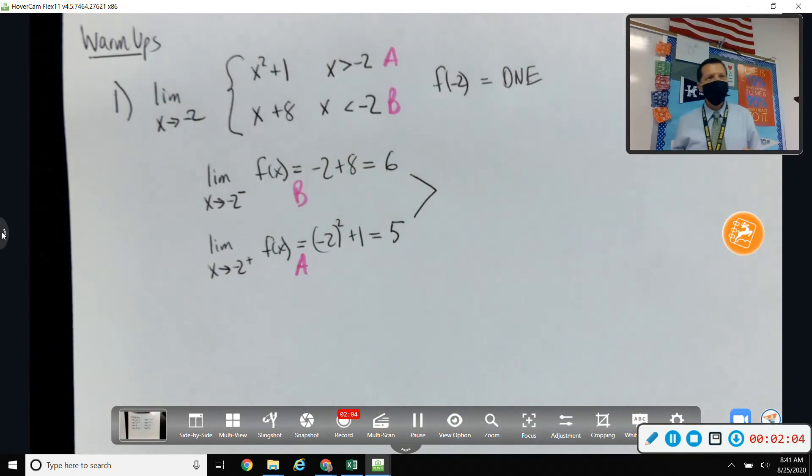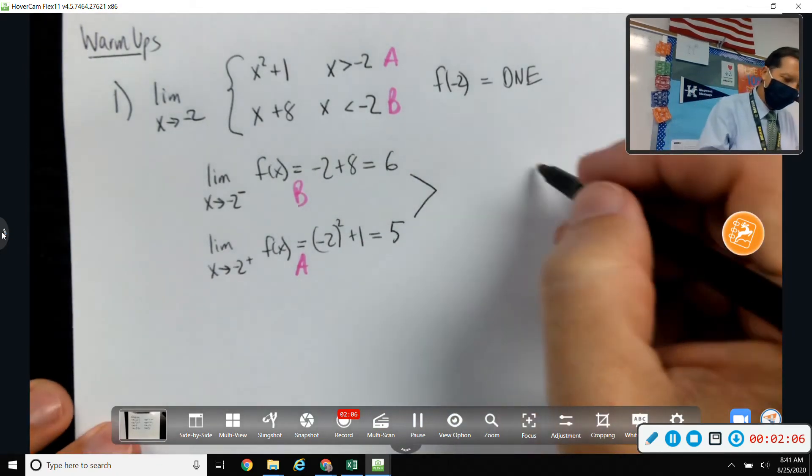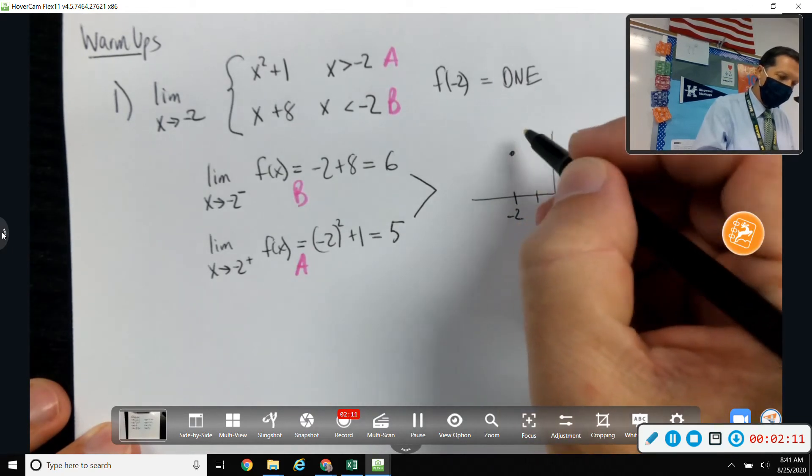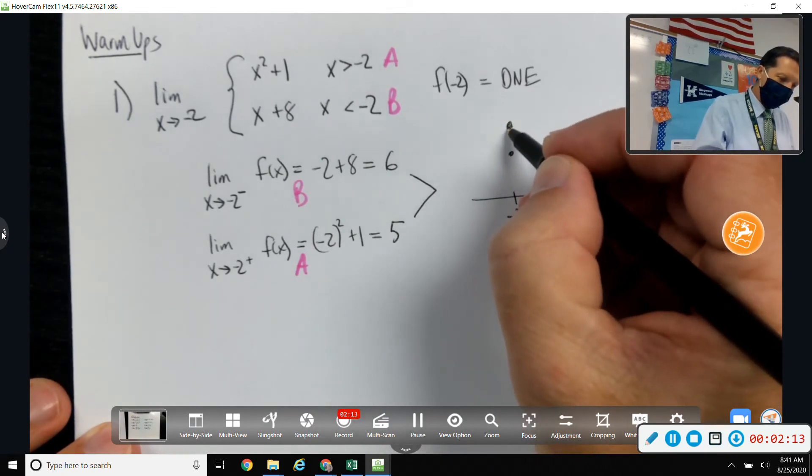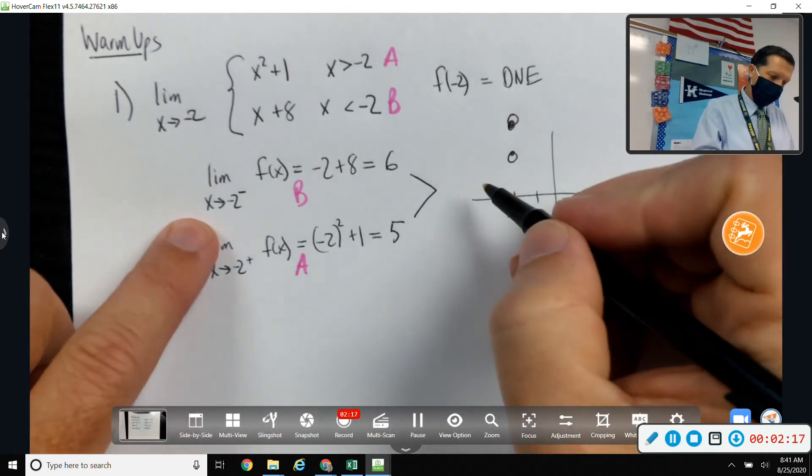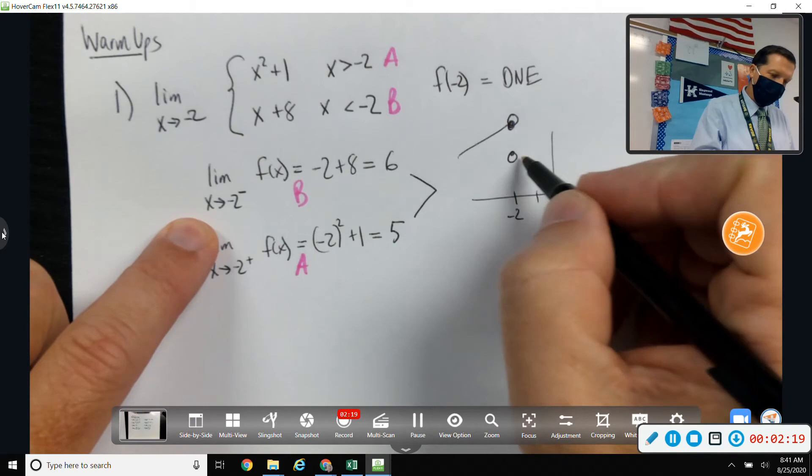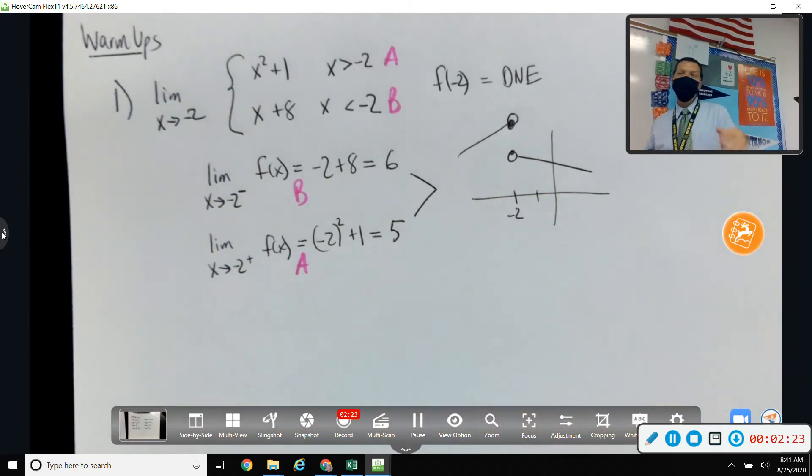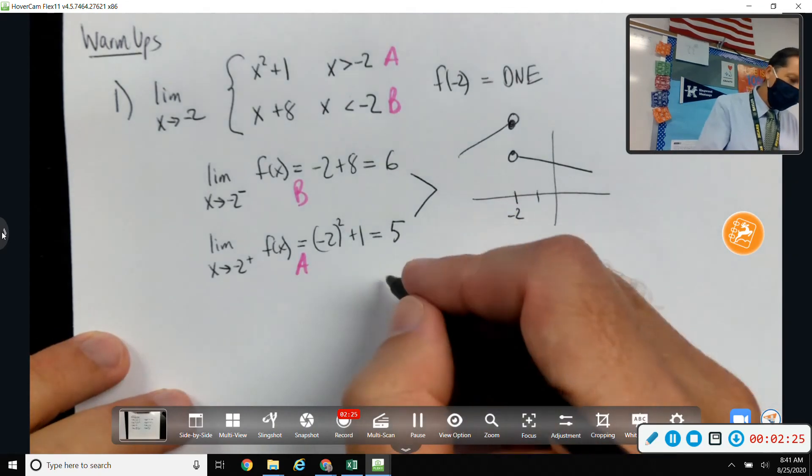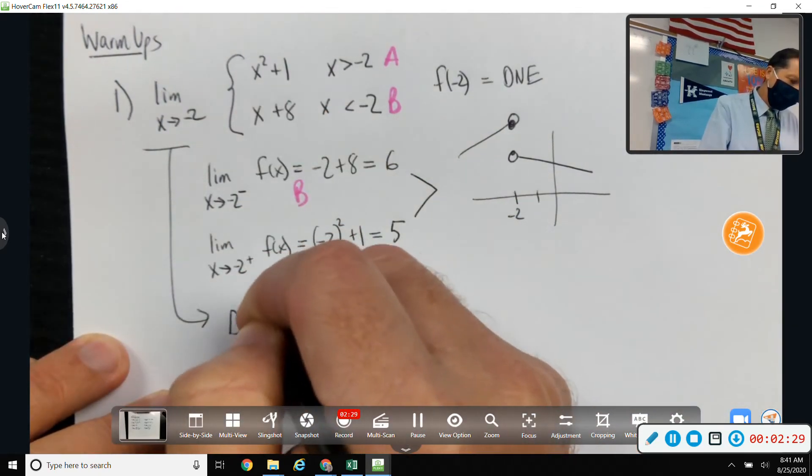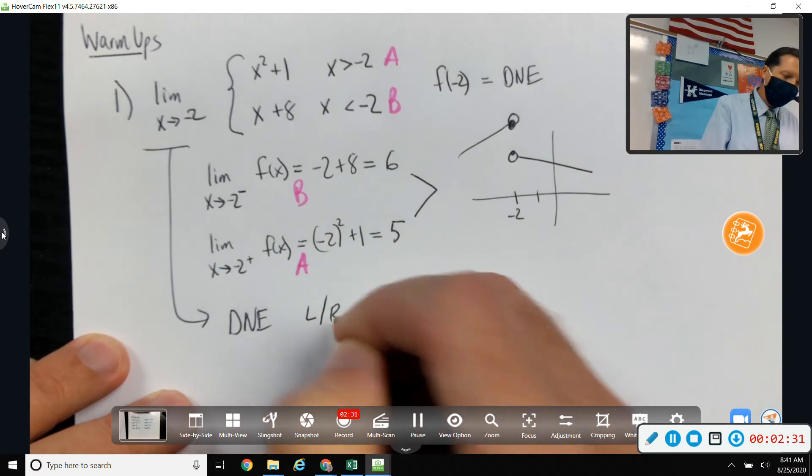Those don't match. So that means this is... If we graph this thing, I really don't want to graph the whole thing, but one of them is at 5, one of them is at 6. Oops, they're both open circles, though. Let's see. From the left, it was at 6. From the right, it was at 5. So I don't know what they're doing, but there's no limit there. There's a jump there. So that limit, the answer would be DNE because they have different left and right limits.